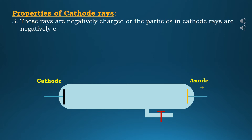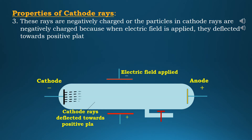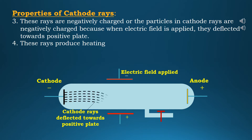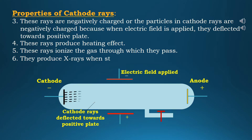This indicates that cathode rays are made up of material particles. Third, the particles in cathode rays are negatively charged, because when an electric field is applied they are deflected towards the positive plate, which means these rays consist of negatively charged particles. Some other properties of cathode rays are: they produce a heating effect, they ionize the gas through which they pass, and they produce X-rays when they strike against hard metals like tungsten, molybdenum, etc.